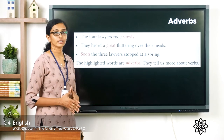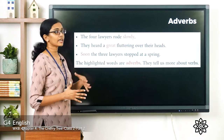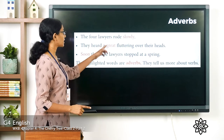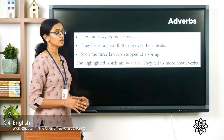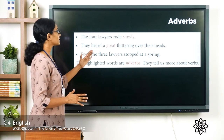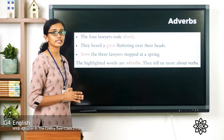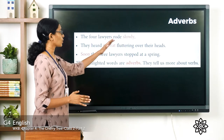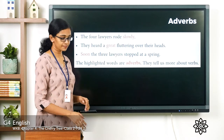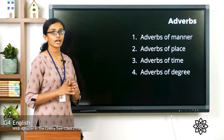The word 'slowly' shows the manner of the action — how the action was completed. In the second example, 'great' shows the extent or degree of fluttering. In the third example, 'soon' shows the time of the action. So all these highlighted words — slowly, great, soon — are examples of adverbs: words that describe the verb.